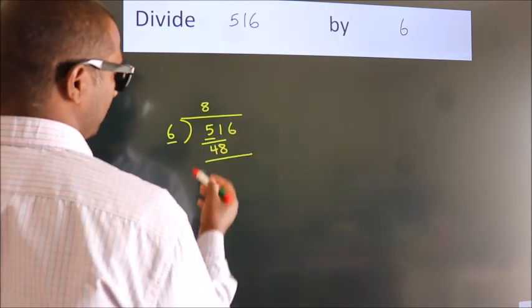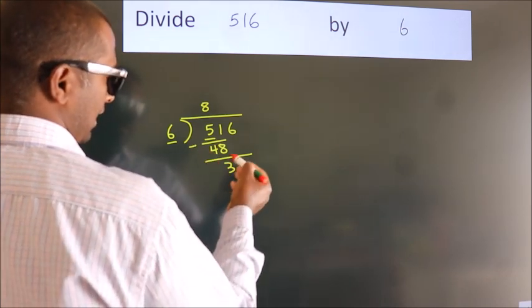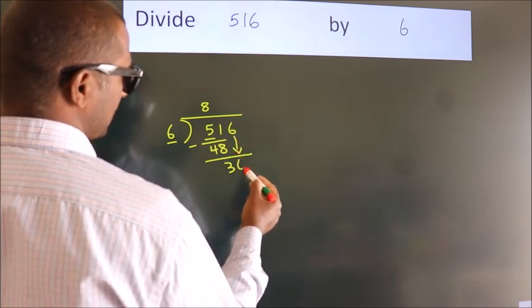Now we should subtract. We get 3. After this, bring down the next number, so 6 comes down.